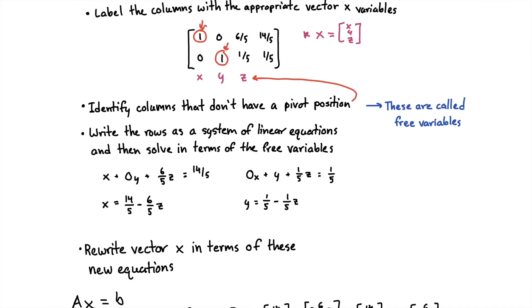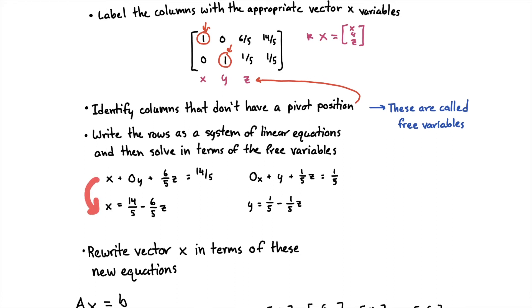Next, we're going to write the rows as a system of linear equations and then solve in terms of the free variables. Each column that has a pivot position, we're going to solve for that using the free variables. We wrote out our first row as a linear equation. Looking at our first row, the pivot position is in the X column, so we're going to solve for X in terms of our free variable Z. Then we have our second row, and in the second row, the pivot position is in the Y column, so we're going to solve for Y in terms of the free variable Z. We're also going to solve for our free variable. However, we're just going to say it equals itself.